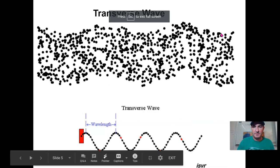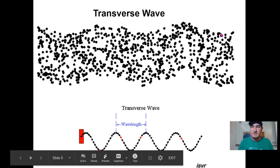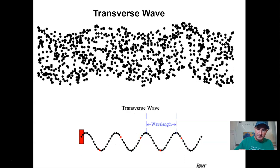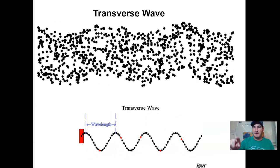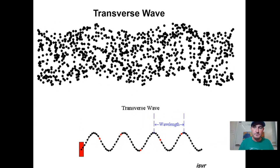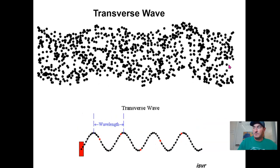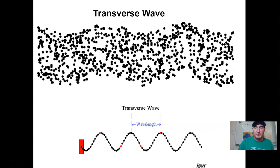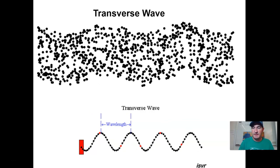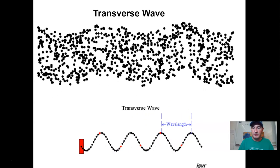Examples of a transverse wave include water waves — the water is the medium, and a water molecule goes up and comes back down, pushing on neighboring molecules and transferring energy. Another example would be some seismic waves created by earthquakes, and also light waves behave more like transverse waves. Particles in a longitudinal wave move parallel to the direction of the wave, and particles in a transverse wave move perpendicular to the direction of the wave.